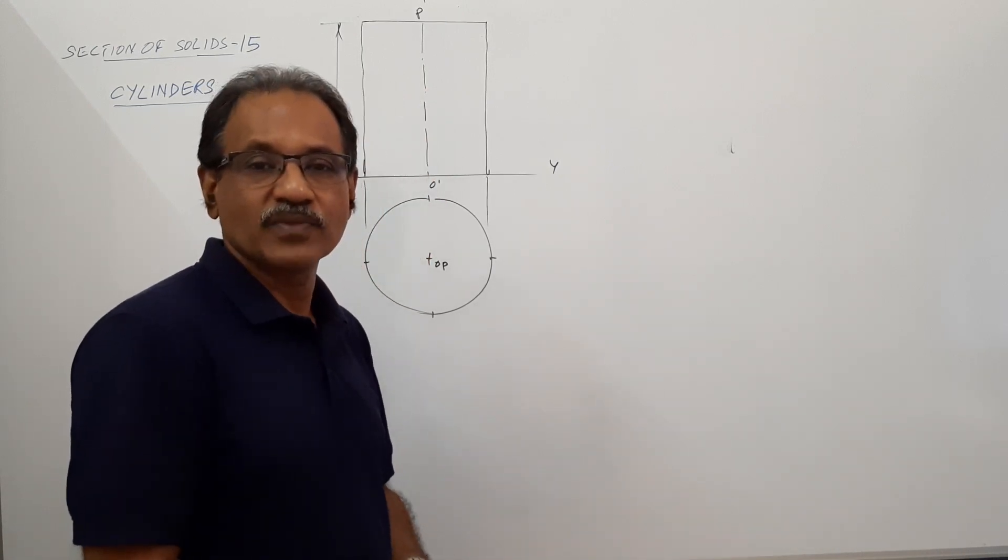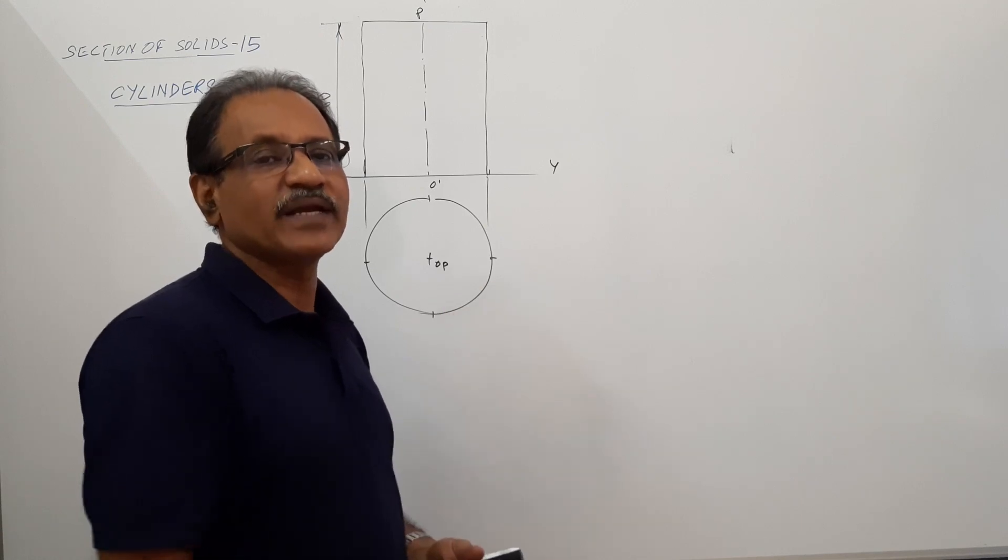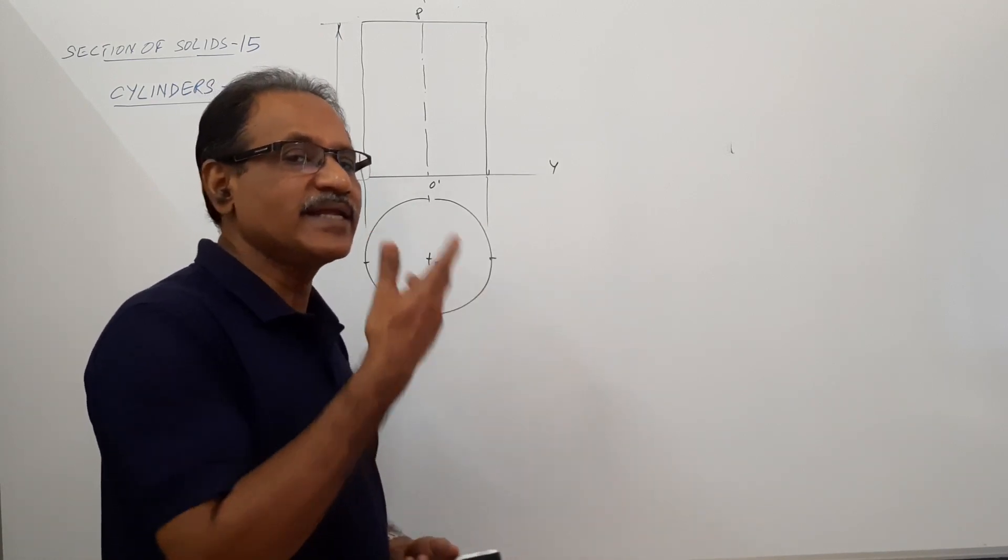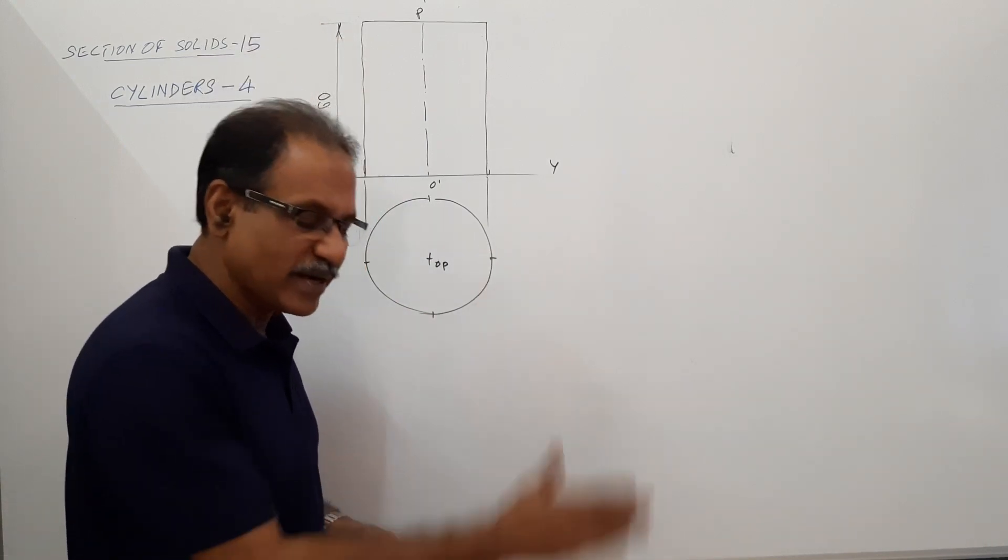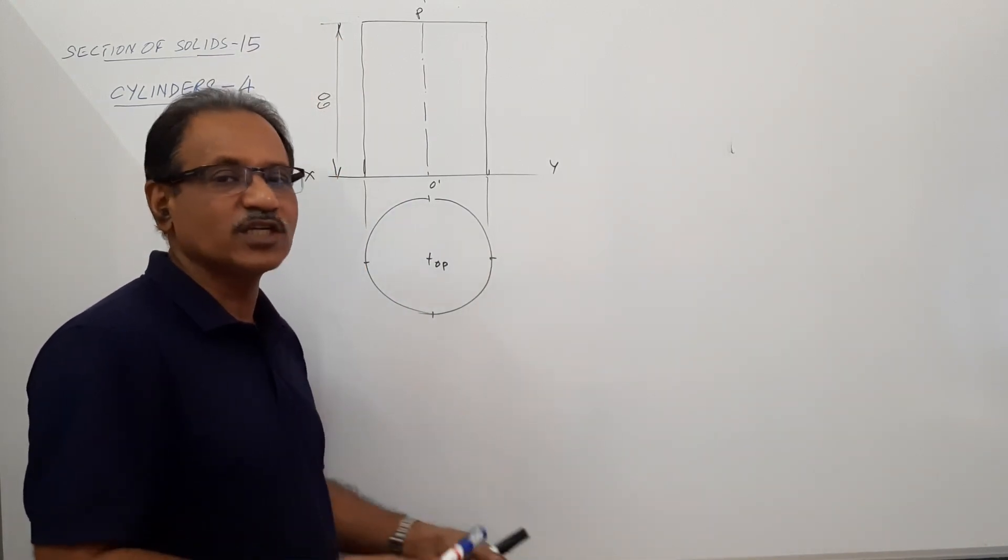The cutting plane you want to cut: a cutting plane which is perpendicular to HP will be visible in the plan, and a cutting plane that is perpendicular to VP will be visible in elevation. Here the cutting plane is perpendicular to HP and parallel to VP, so it is visible in the plan.